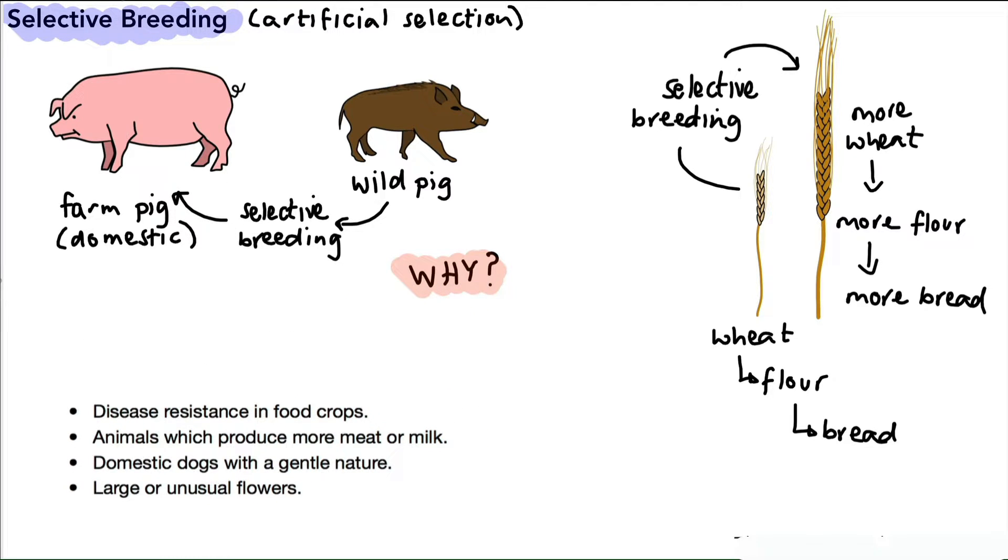So we have, the first one is producing crops that are disease resistant. So imagine the wheat plant is resistant to disease—that would be very useful. We have animals which produce more meat or milk, so you can think of cows, sheep, pigs we've already talked about. We've got domestic dogs with a gentle nature which can be used as pets, and we can produce plants that have large or unusual flowers. So these are four examples of how and why we use selective breeding.